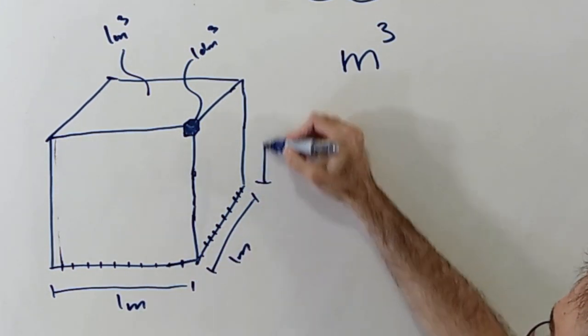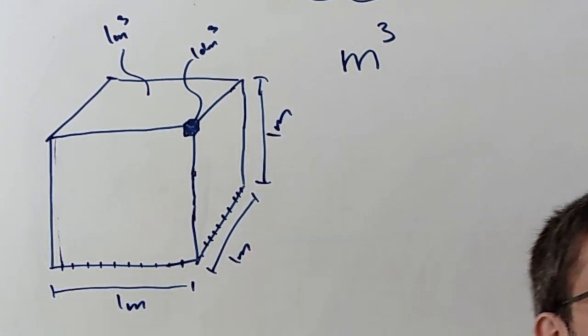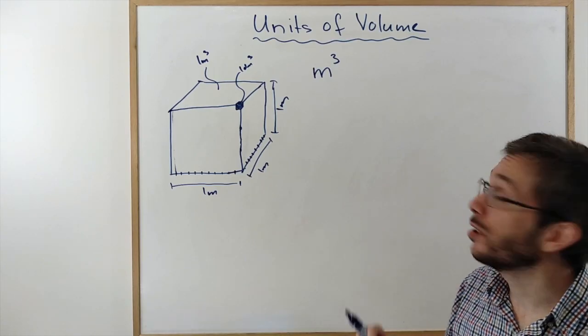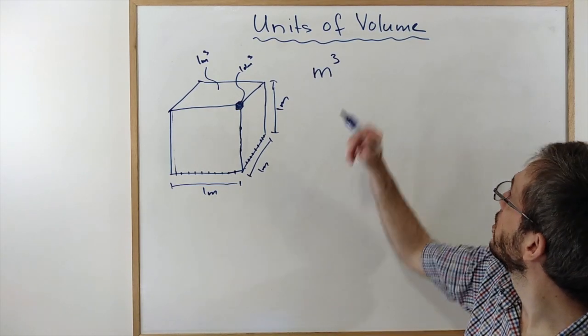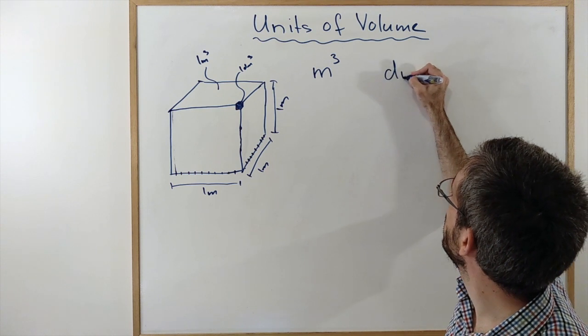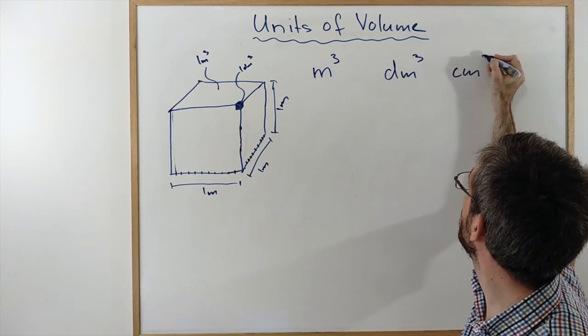A height of 1 meter and a width of 1 meter. Often you can also see the derived units of a decimeter cube and a centimeter cube.